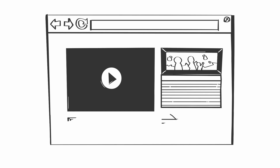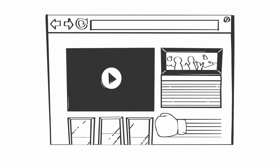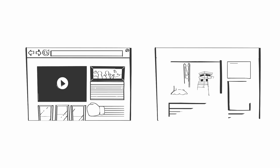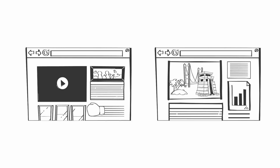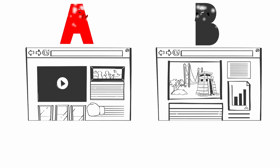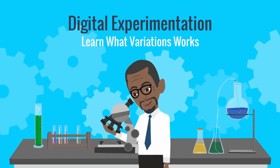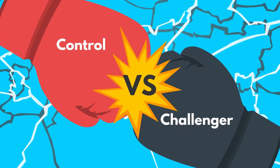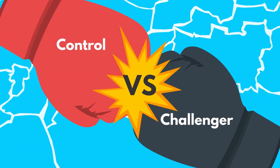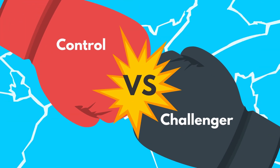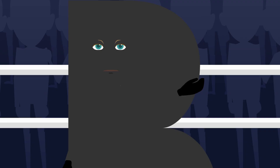In an A/B test, the original page or experience is the control, or the A experience, and the challenger is the B experience — the new version that you've made to compete against the control. These two versions are competing with each other to see which one does better for your visitors.